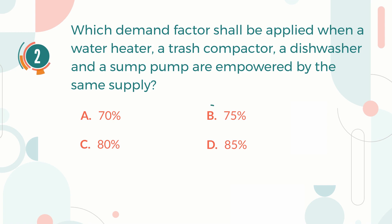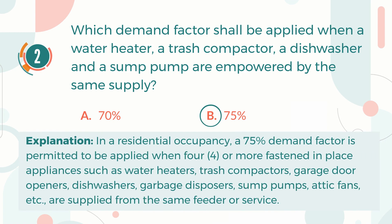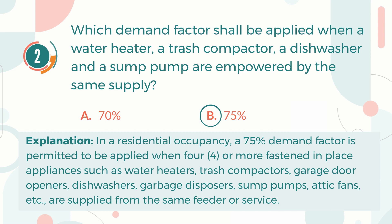The correct answer is B, 75%. Explanation: In a residential occupancy, a 75% demand factor is permitted to be applied when four or more fastened-in-place appliances — such as water heaters, trash compactors, garage door openers, dishwashers, garbage disposers, sump pumps, and attic fans — are supplied from the same feeder or service.